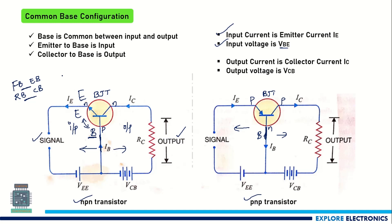If you want to use this common base configuration as an amplifier, we need to bias the emitter-base junction as forward biased and the collector-base junction as reverse biased. That is why, looking at the bias voltages VEE and VCB (which can also be written as VCC), for the NPN transistor where the emitter is N and base is P, the positive end of VEE is connected to P and the negative end to N, making the input side forward biased.